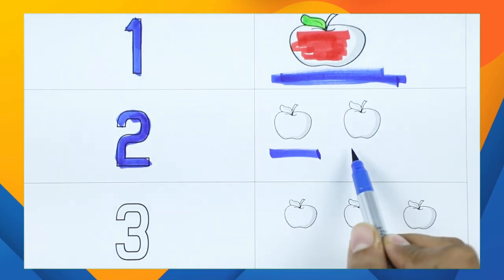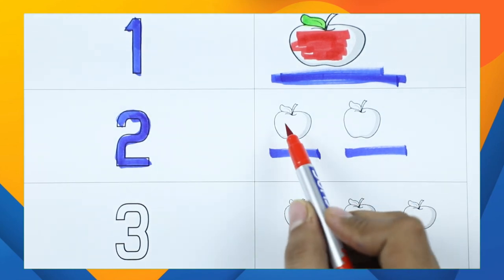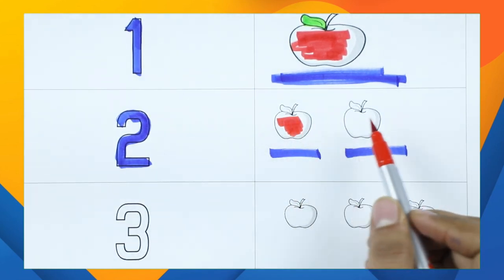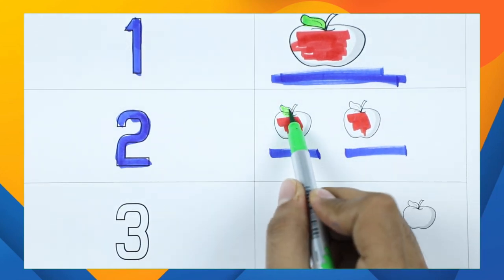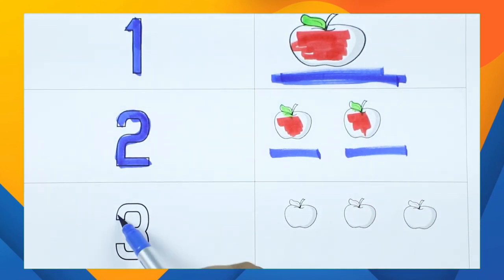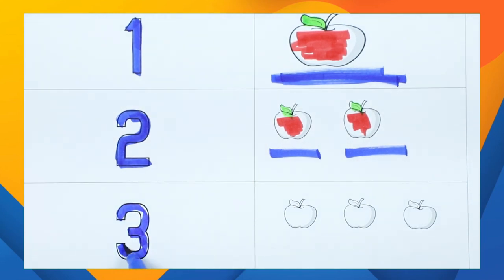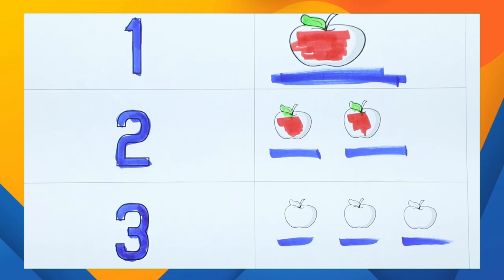One apple, two apples — it's two apples! Red color: one apple, two apples. One leaf, two leaves. Now apple number three — we want three apples here. One apple, two apples, three apples!